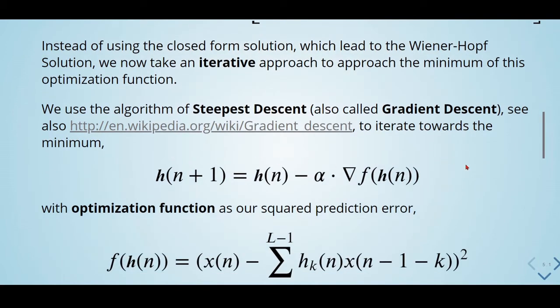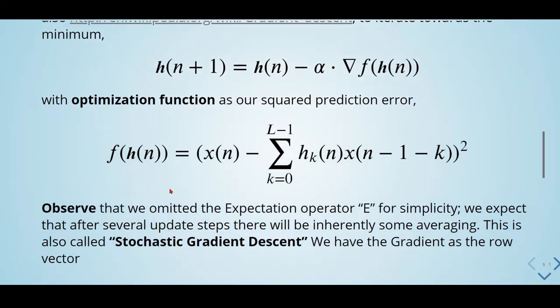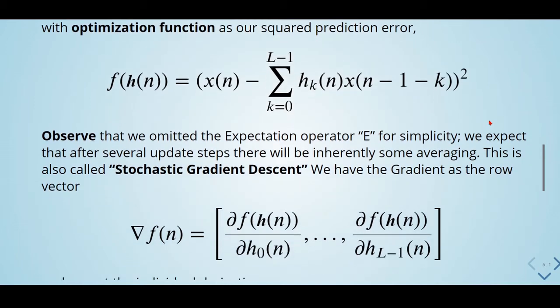With an optimization function as our squared prediction error, observe that we omitted the expectation operator E for simplicity. We expect that after several update steps, there will be inherently some average. This is also called the stochastic gradient descent. We have the gradient as the row vector.